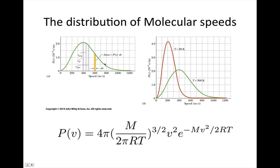If we plot it, we end up getting a curve like this. So you can see there is a minimum speed that they can have. But then there's not really a maximum speed. So there's a long tail here.